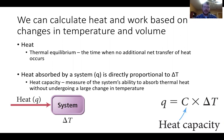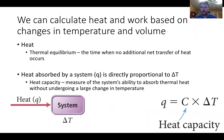We ended up last time talking about how we can calculate heat and work based on changes in temperature and volume. Heat is Q. One thing that's very important in this section is thermal equilibrium — the point at which there is no net transfer of heat. Equilibrium is a dynamic process; it's constantly occurring, but there is no net transfer, no extra heat being transferred from one thing to another. The heat absorbed by the system, Q, is directly proportional to delta T.